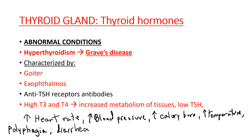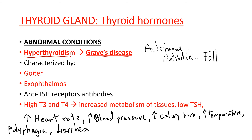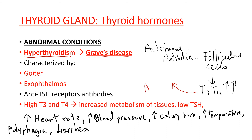Abnormally high levels of T3 and T4 are called hyperthyroidism, or Graves' disease. Graves' disease or hyperthyroidism is an autoimmune condition in which antibodies attach to follicular cells of the thyroid, causing them to secrete T3 and T4. High levels of T3 and T4 in turn inhibit the anterior pituitary, so the levels of thyroid stimulating hormone in hyperthyroidism would be low.